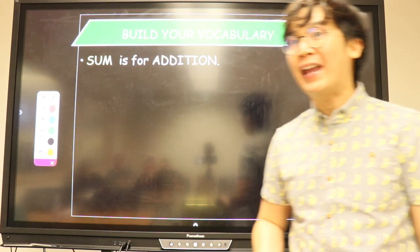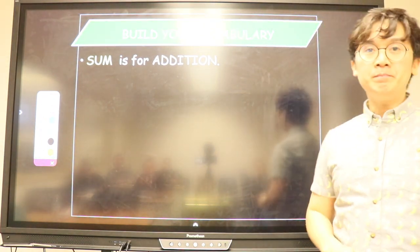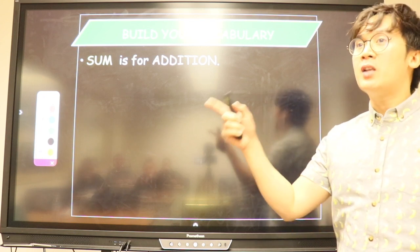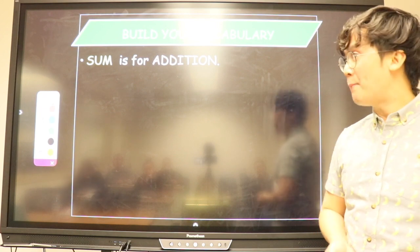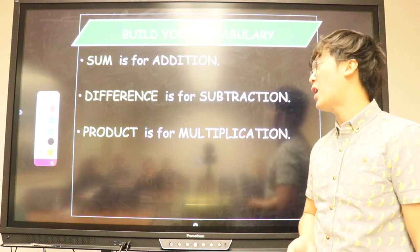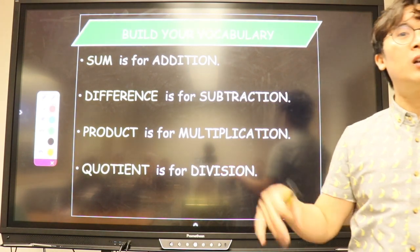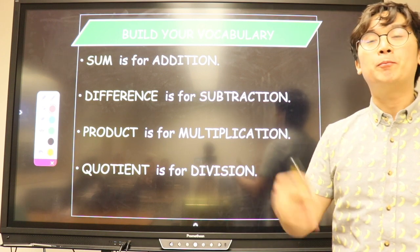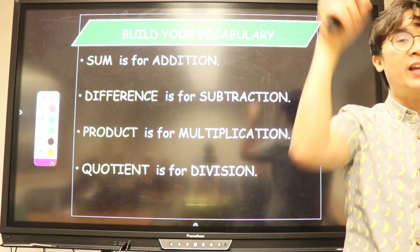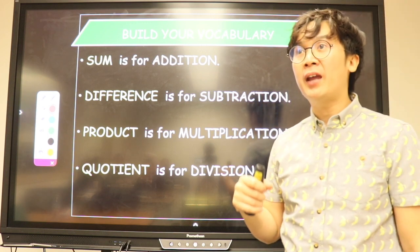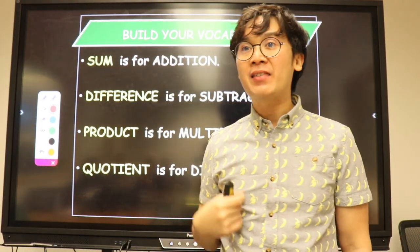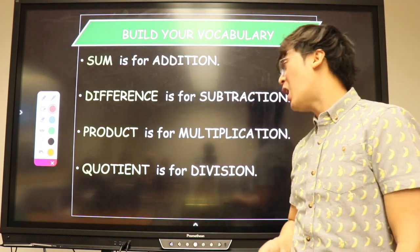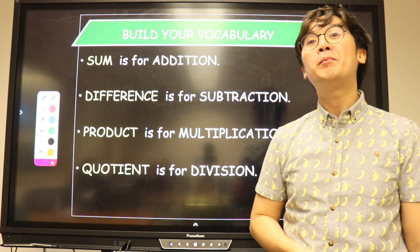First, we need to build your vocabulary or make sure you understand the words we use in mathematics. Addition is sum - sum is what we use to describe the number that when you add together equals that number. Difference is for subtraction, product is for multiplication, and quotient is for division. You're aware of these words in math operations, right? Just like when I say plus, you see that symbol in your head. Similarly, when you hear sum, difference, product, or quotient, you're most likely being asked to add, subtract, multiply, or divide.